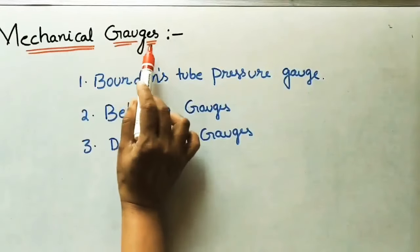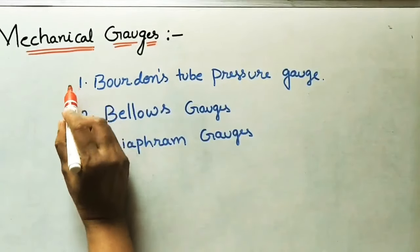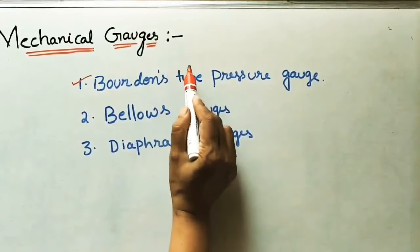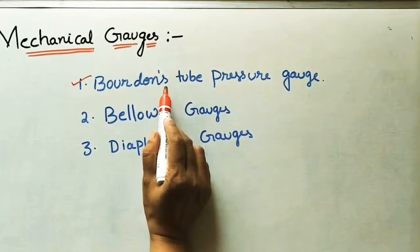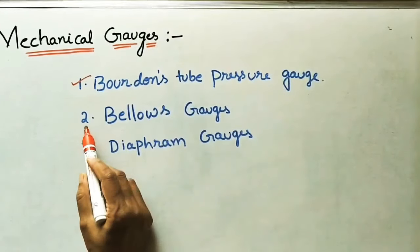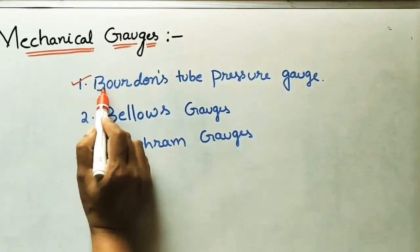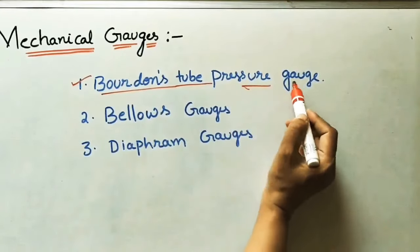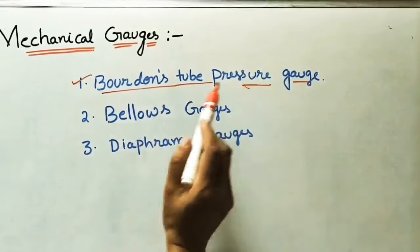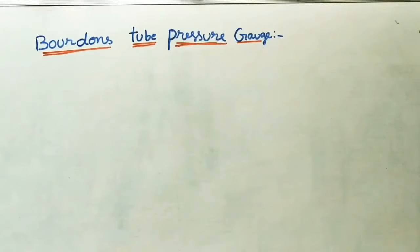High pressure can be measured using mechanical gauges, which are taken in three types. The first one is the Bourdon tube pressure gauge, where one elastic tube is used for finding the pressure value. The next one is the bellows gauge, and the third one is the diaphragm gauge. In today's class we will discuss about the Bourdon tube pressure gauge.